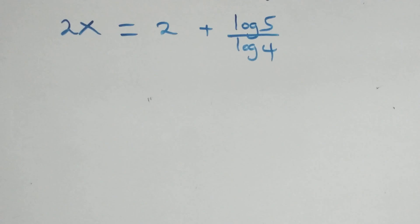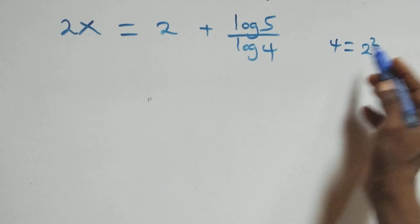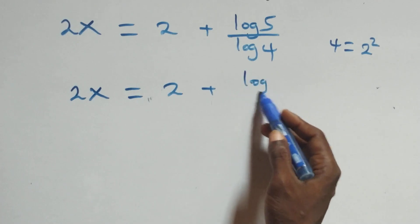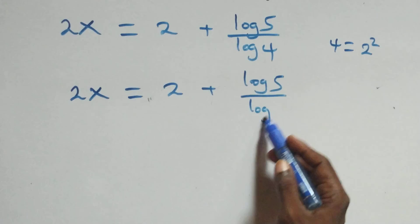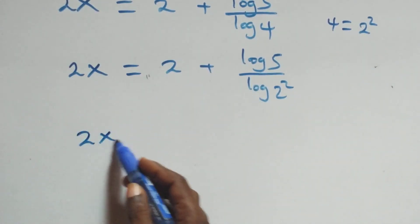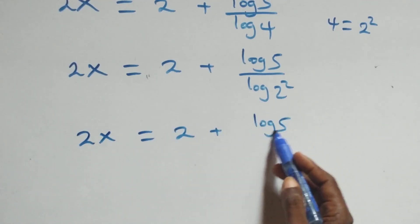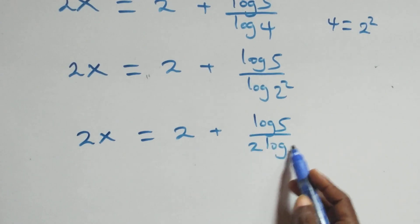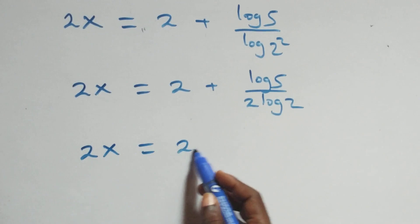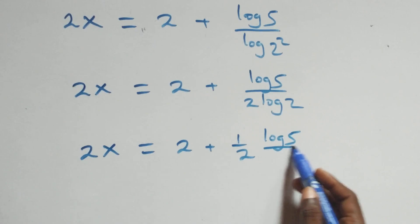Next step: 4 can be expressed as 2 times 2, that is 2 squared. So what we have becomes 2x equals 2 plus log 5 over log 2 squared. Then we apply the power log rule: the 2 in the exponent comes down, and we have 2x equals 2 plus log 5 over 2 log 2, which can also be written as 2x equals 2 plus one-half times log 5 over log 2.